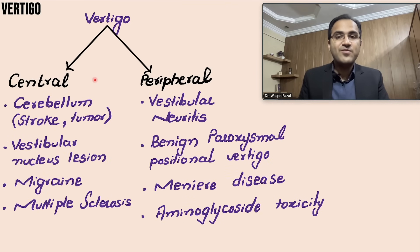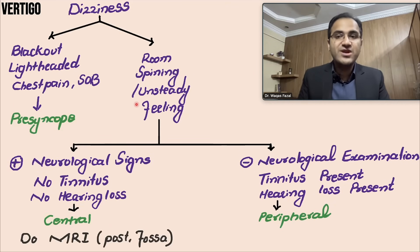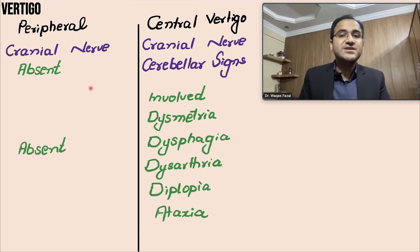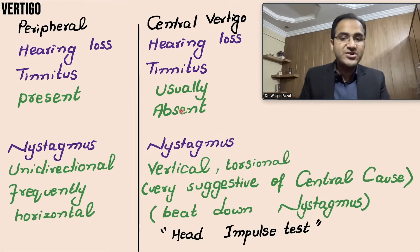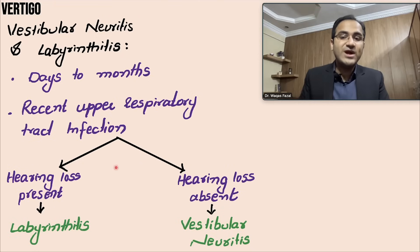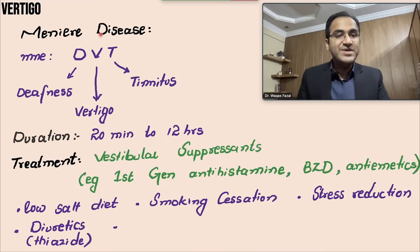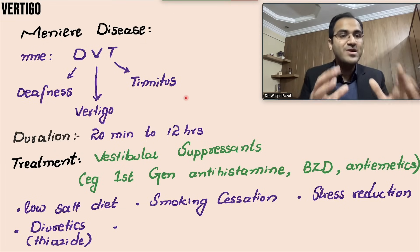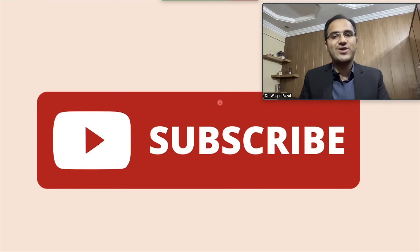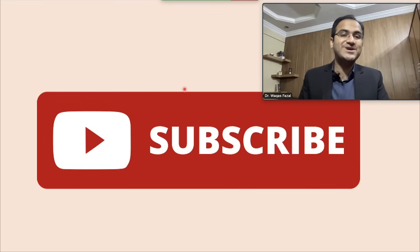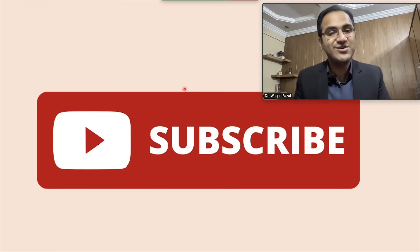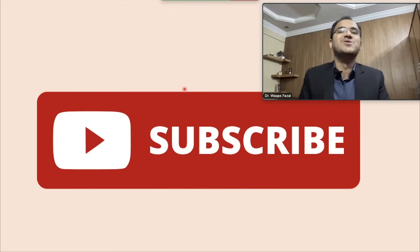In summary, we covered the definition of vertigo, central and peripheral causes, approach to a patient with vertigo, the dangerous D's, differences between peripheral and central vertigo, vestibular neuritis, BPPV, Meniere's disease and their management, and commonly used drugs for acute vertigo. If you liked this video, please click subscribe and check out the other emergency medicine and neurology lecture videos linked in the description below.